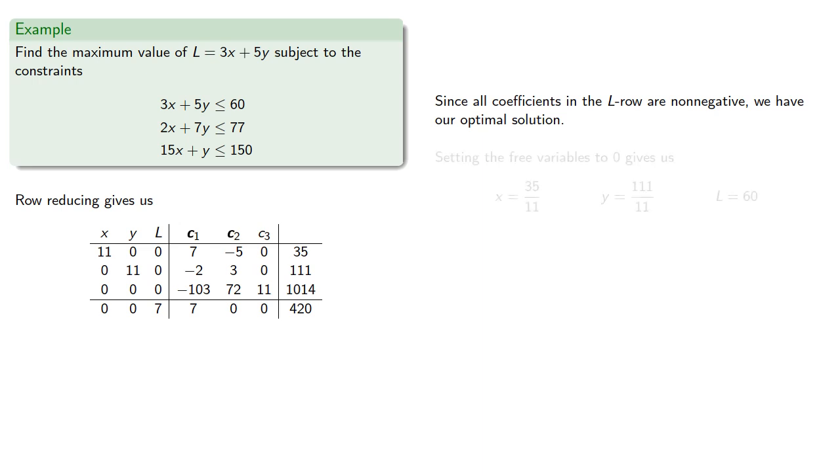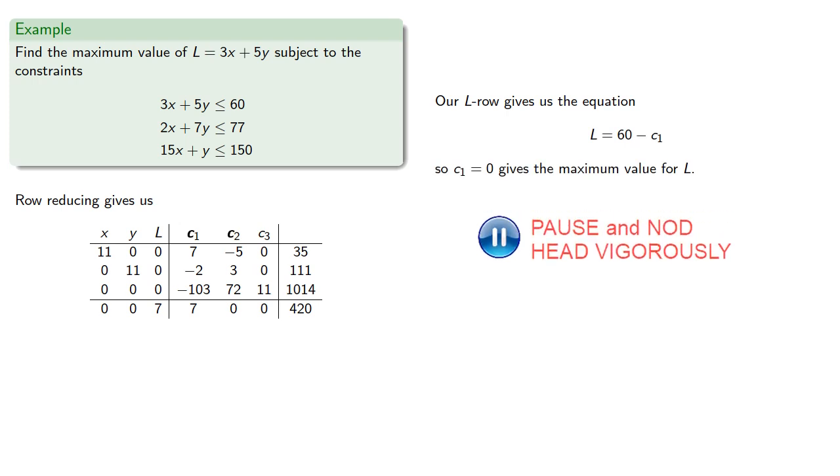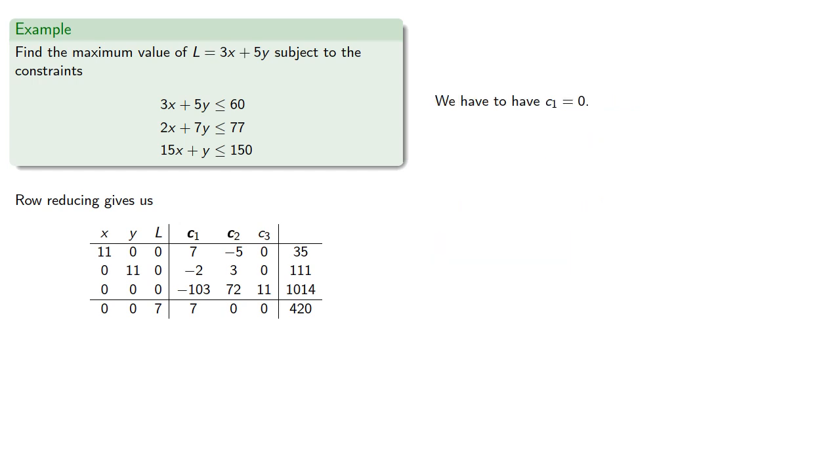So setting the free variables equal to zero gives us, which will be the optimal solution. Or is it? Notice that our L row gives us the equation. So C1 equals zero gives us the maximum value for L. But C2 and C3 are also free variables. So we can choose different values for them as long as we satisfy our positivity constraints.